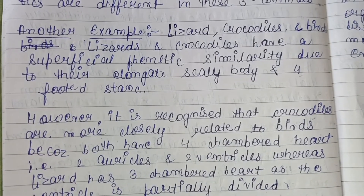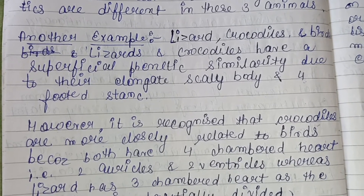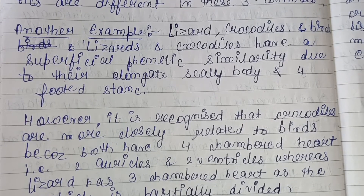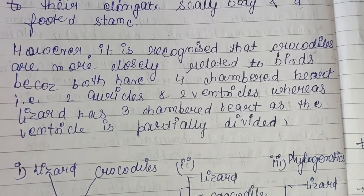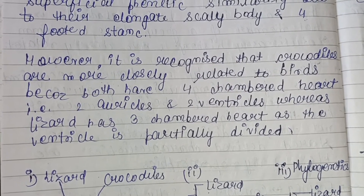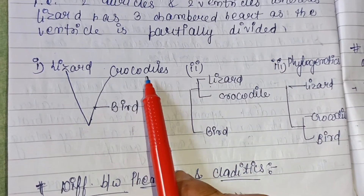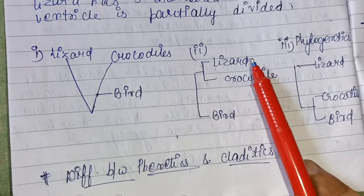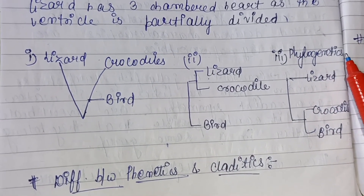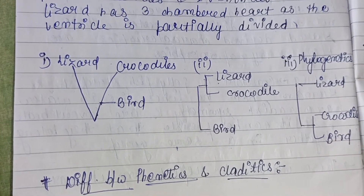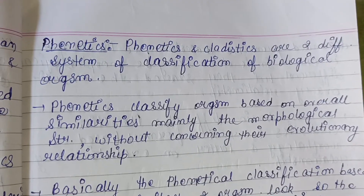Consider another example: lizards, crocodiles, and birds. Lizards and crocodiles have a superficial phenetic similarity due to their elongate, scaly bodies and four-footed stance, and both represent the class Reptilia. However, crocodiles are more closely related to birds because both have a four-chambered heart — two auricles and two ventricles — whereas lizards have a three-chambered heart with a partially divided ventricle. In a diagram, based on shared characteristics, lizards and crocodiles appear close and birds distant; but based on shared derived characteristics, lizards are actually more distant, while crocodiles and birds are closely related.